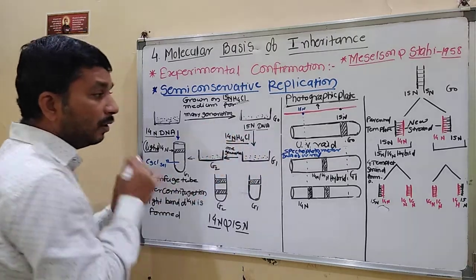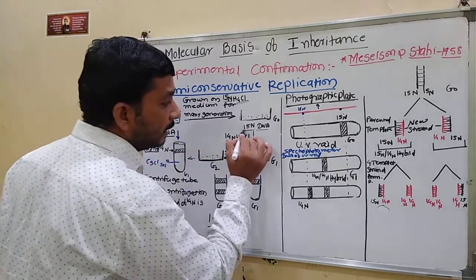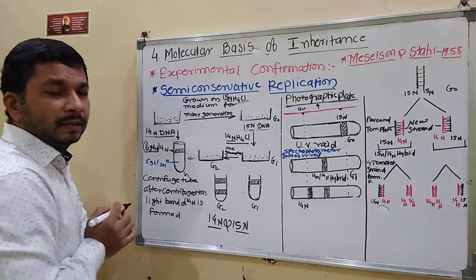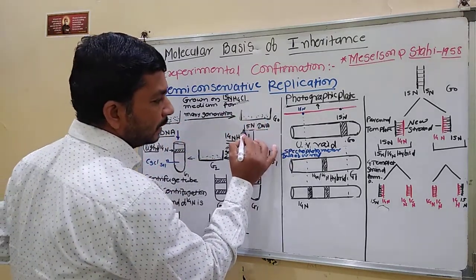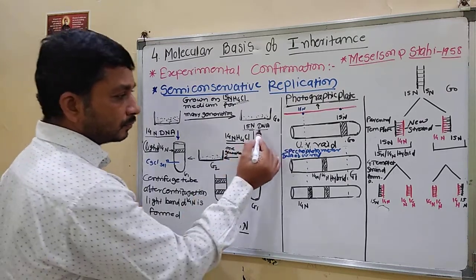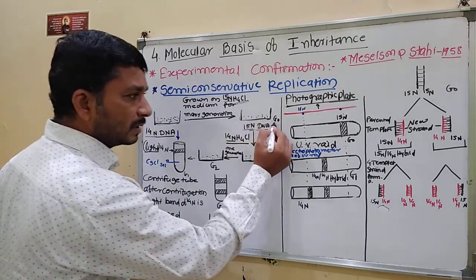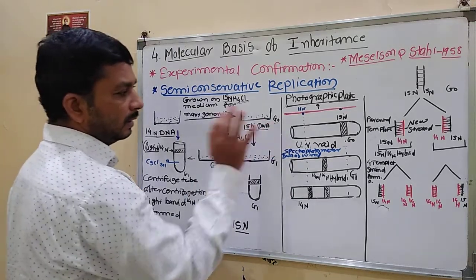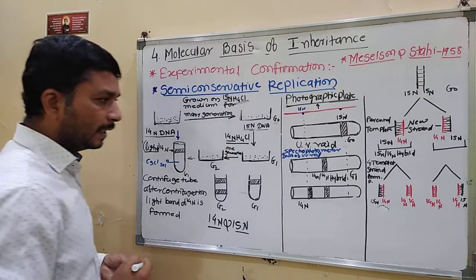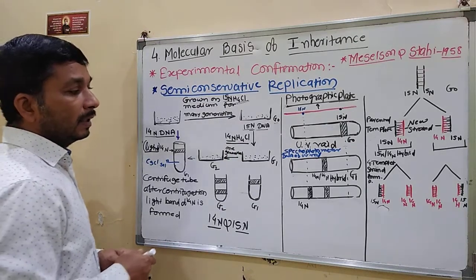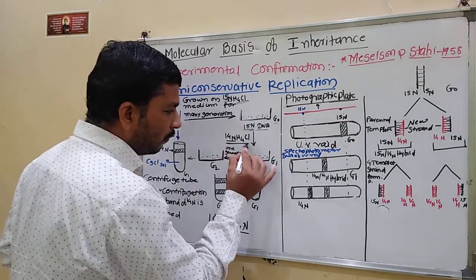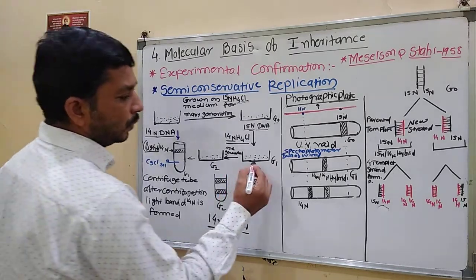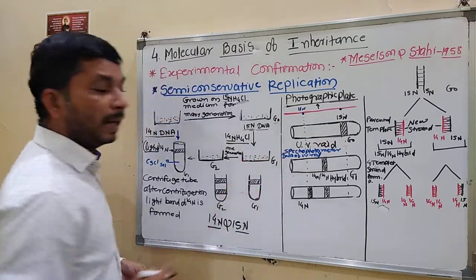This stage is called the G0 stage. In the G0 phase, they found 15N DNA. Then they provided a 14N NH4Cl solution to grow this E. coli bacteria, switching from 15N medium to 14N NH4Cl medium.